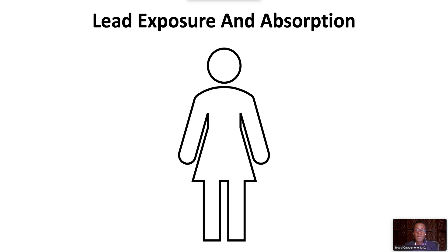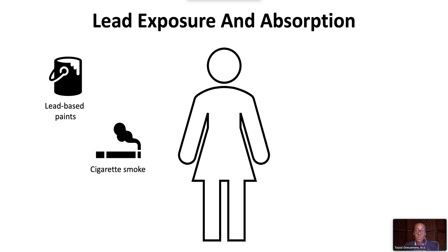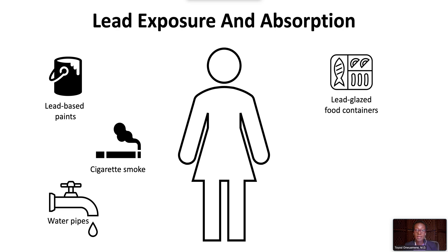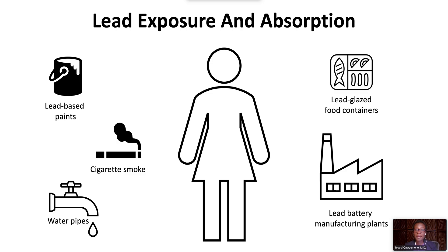Sources of lead in the environment include lead-based paints that remain in older buildings, cigarette smoke including second- and third-hand exposures, drinking water through leaching from lead-containing pipes in the plumbing of older buildings, lead-glazed food containers that contaminate water, food, and beverages, and lead-battery manufacturing and recycling plants that contaminate their surrounding environment.